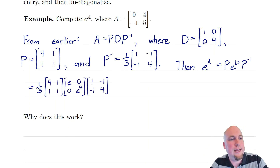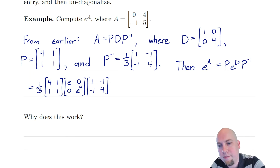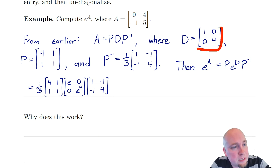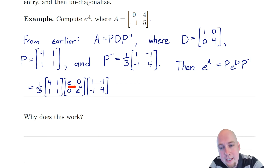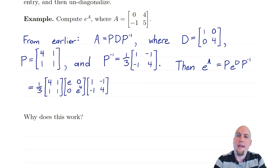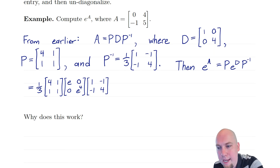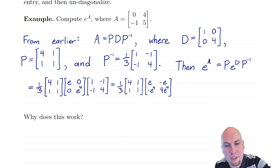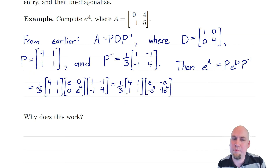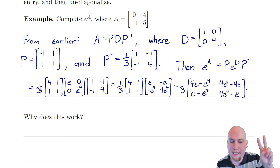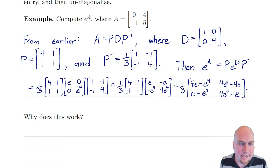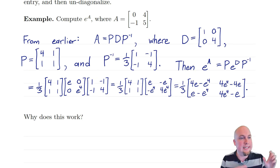P and P inverse we leave alone, and I pulled the one-third from P inverse out in front. I took the diagonal matrix and applied e to each of its diagonal entries: e to the power 1 gives e, and e to the power 4 gives e to the power 4. Then I multiplied those matrices back together. I did the rightmost multiplication first to get an intermediate matrix, then did the next matrix multiplication — you have to do two matrix multiplications to undiagonalize something — and I get this admittedly ugly-looking matrix. But that is what e to the power A is.